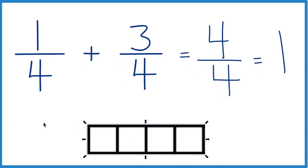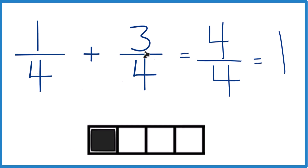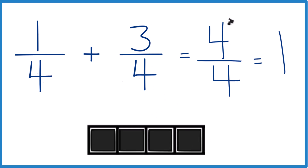Imagine you have four blocks — 1, 2, 3, 4 — each one is 1 fourth. So we have our 1 fourth here, let's fill that block in. And then we're going to add 3 fourths, so three more parts of four — three more blocks: 1, 2, 3. Now all four are colored in — that's our 4 fourths.